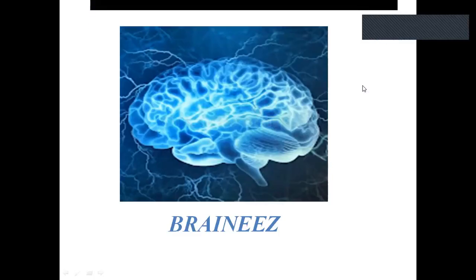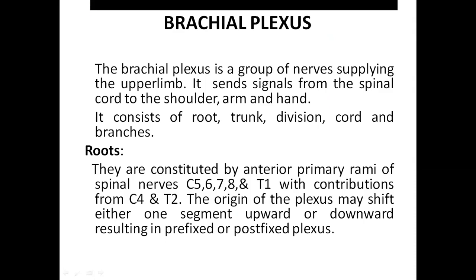Welcome to my channel Brainy's. Today we are going to discuss about the topic brachial plexus. The brachial plexus is a group of nerves which supplies the upper limb. It sends signals from the spinal cord to the shoulder, arm, forearm and the entire upper extremity.